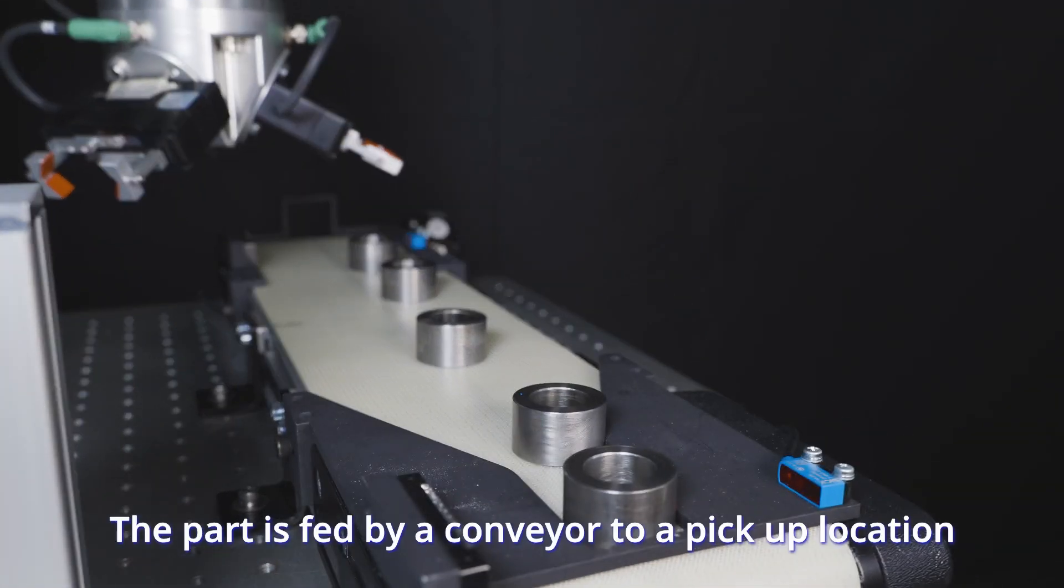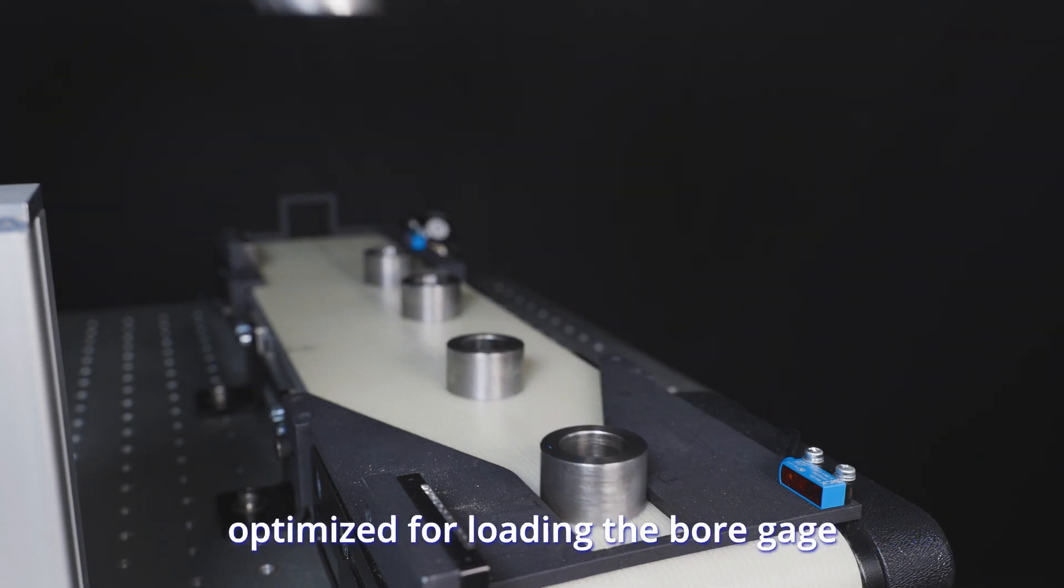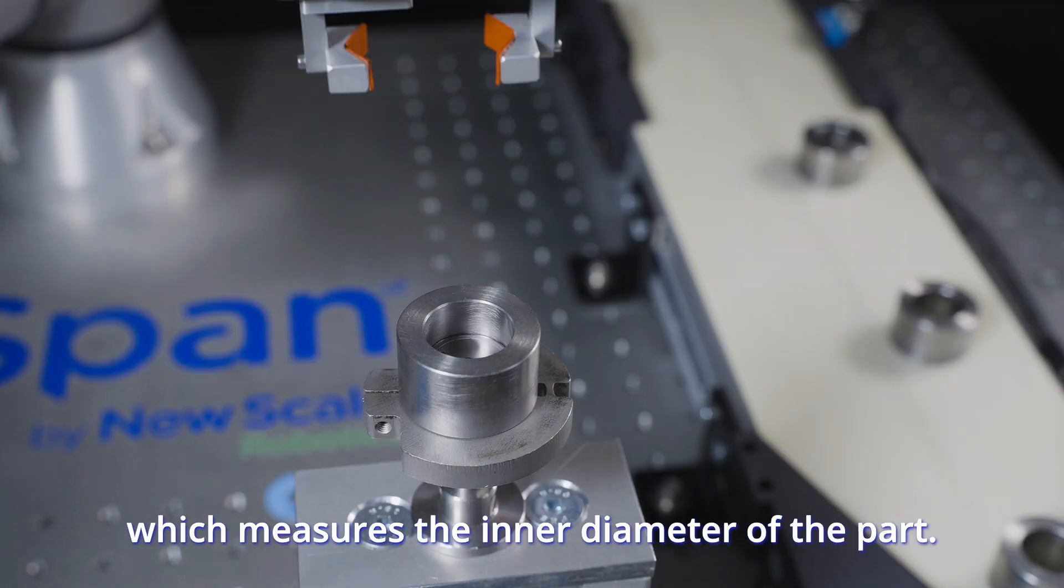The part is fed by a conveyor to a pickup location where the first gripper caliper picks it with fingertips optimized for loading the bore gauge, which measures the inner diameter of the part.